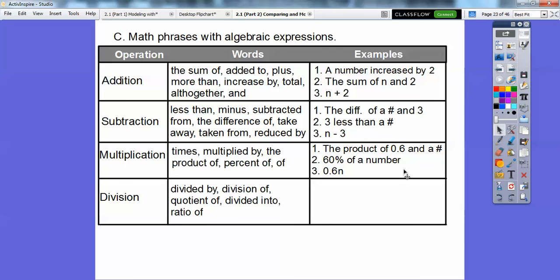And then division: divided by, division of, quotient is the big one on that one, divided into ratio. Ratio we talked about in one of the earlier lessons. That just means division. So the quotient of a number in five, that means a number divided by five. That's what this says, a number divided by five, or n divided by five. Or fraction, this is the same. n over five says n divided by five.